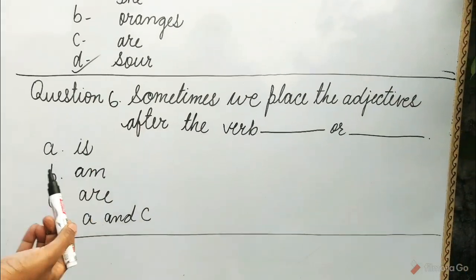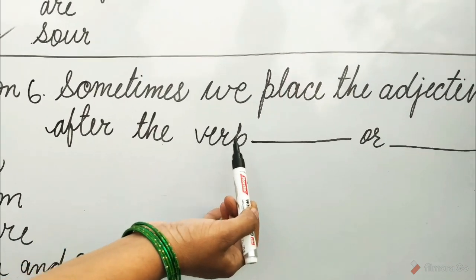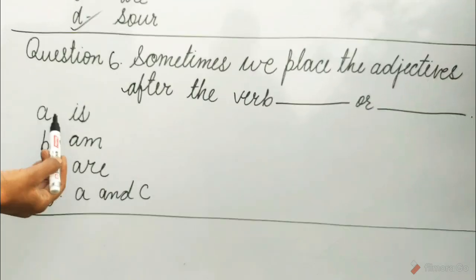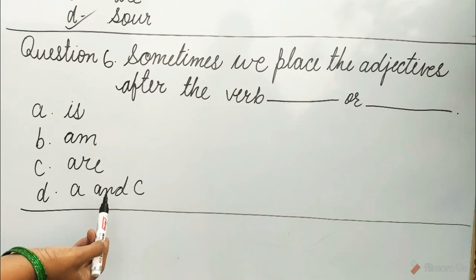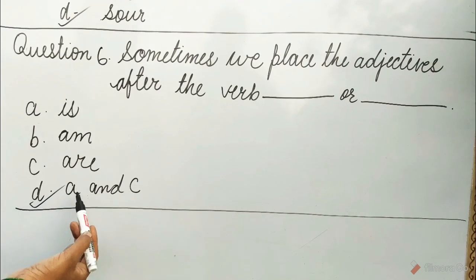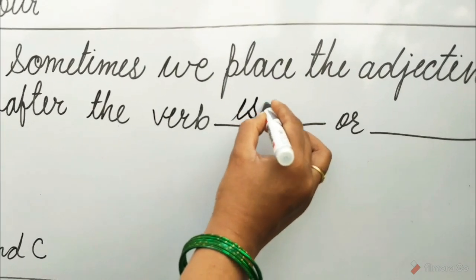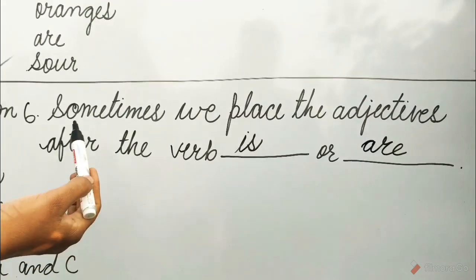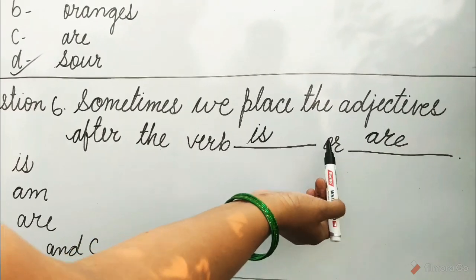Question 6: Sometimes we place the adjectives after the verb ___ or ___. Options are A. Is, B. Am, C. Are, D. A and C. Guess children, which option will be correct? Yes, it is D option — A and C. Sometimes we place the adjectives after the verb is or are.